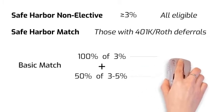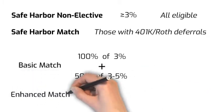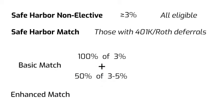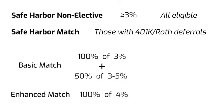The enhanced formula needs to be at least as generous as the basic formula, but is capped at 6%. A common enhanced formula is 100% of the first 4% of deferred compensation.